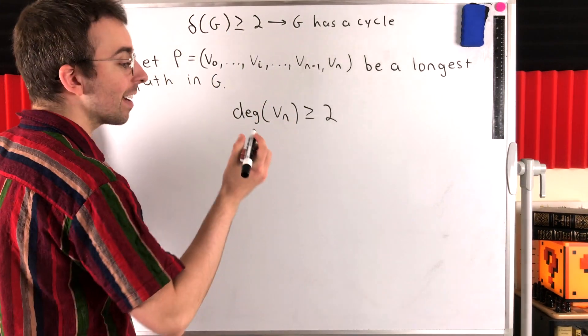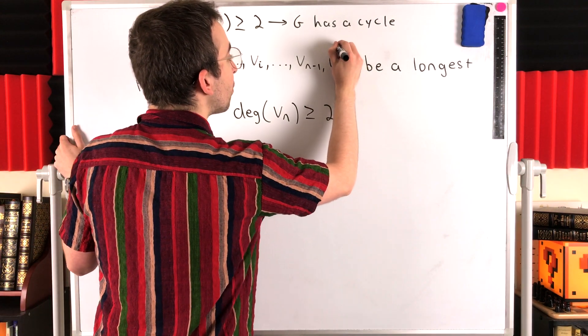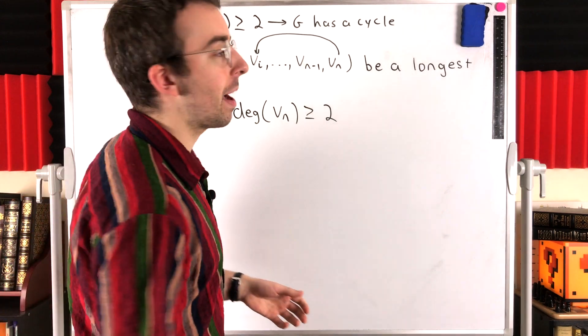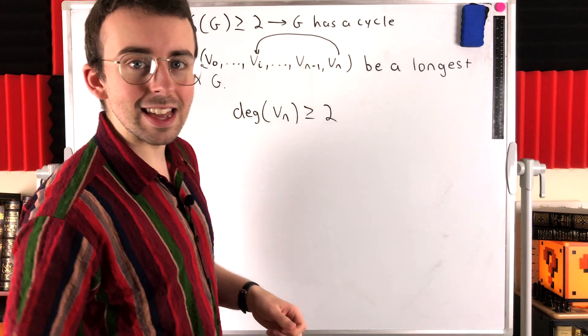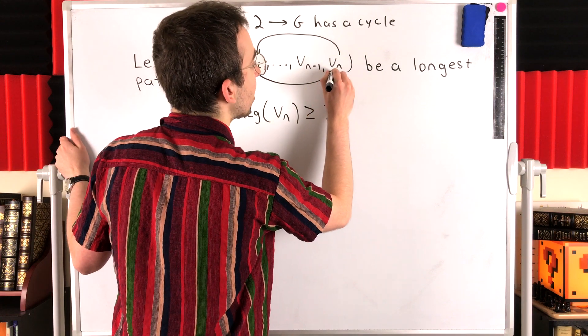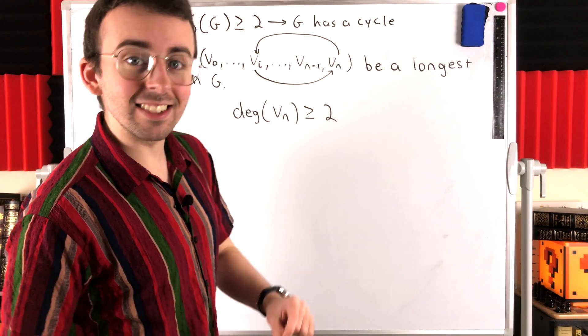Then here's our cycle: we can go from the last vertex VN to its neighbor VI that's on the path, a neighbor other than VN minus one, and then just proceed along the path back to VN. That is our cycle.